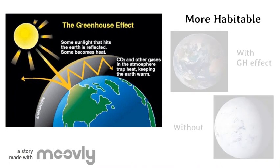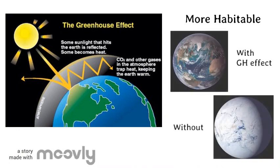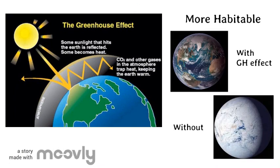Without the natural greenhouse effect, Earth's average temperature would be negative 18 degrees Celsius instead of positive 15 degrees Celsius.